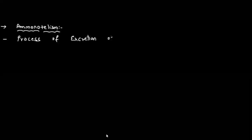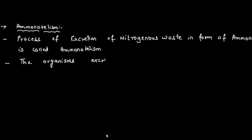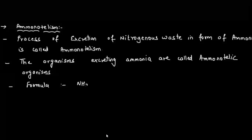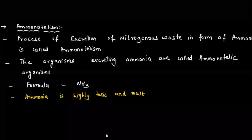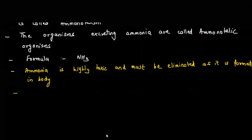Ammonotelism: the process of excretion of nitrogenous waste in the form of ammonia is called ammonotelism. Organisms excreting ammonia are called ammonotelic organisms. The formula for ammonia is NH₃. Ammonia is highly toxic and cannot be stored in the body, so it must be eliminated as soon as it is formed.